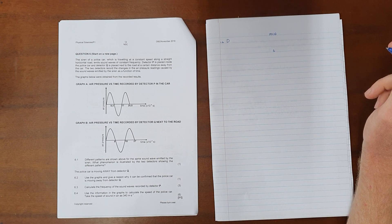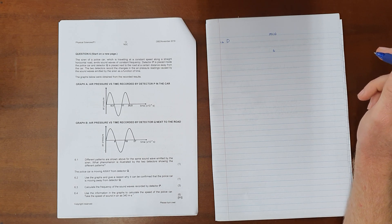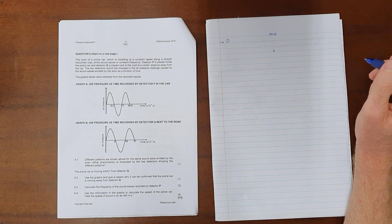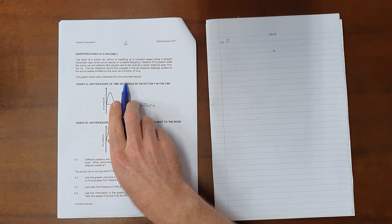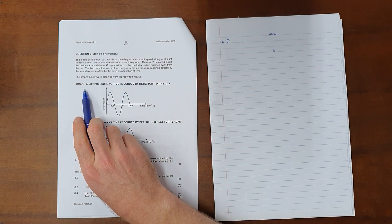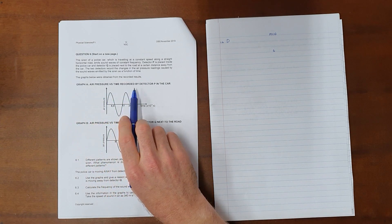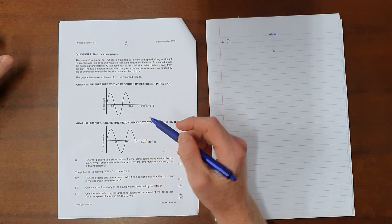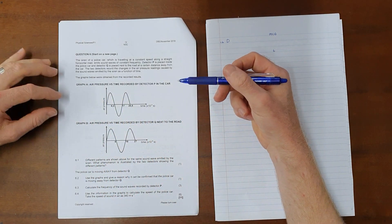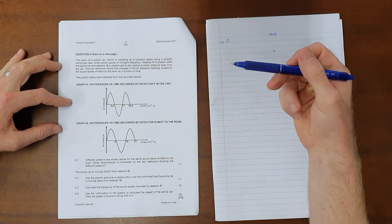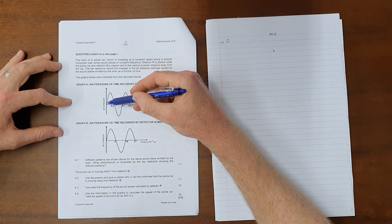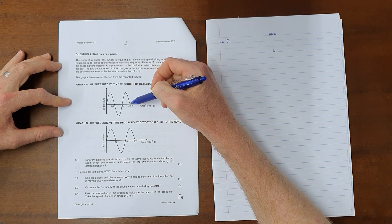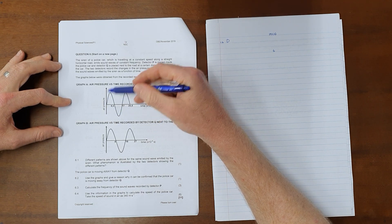The two detectors record the changes in air pressure readings caused by the sound waves emitted by the siren as a function of time. The graphs below were obtained from the recorded results. The first graph, air pressure versus time, recorded by the detector in the car. This detector is going to detect the sound as it is given because there is no relative motion between the car and this detector, which means this detector is telling us what wave is actually being emitted.